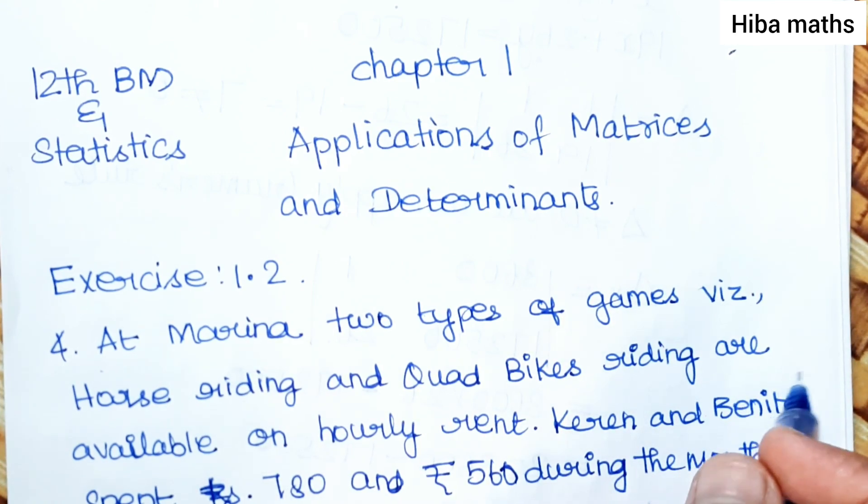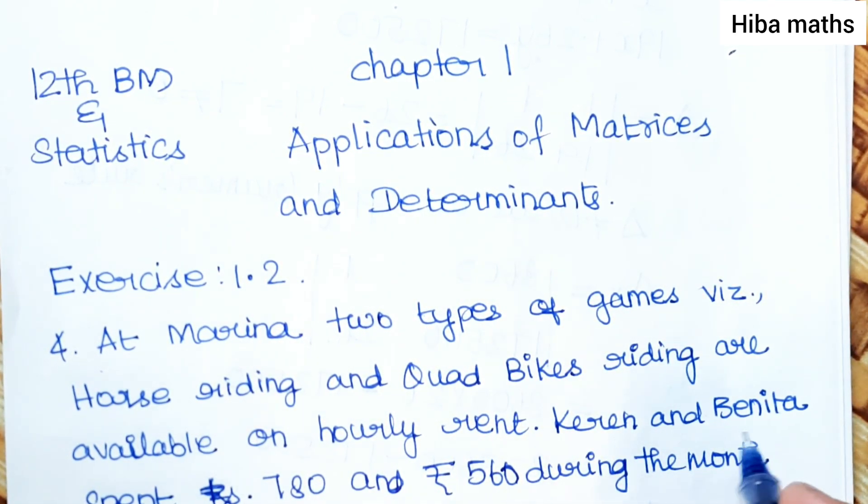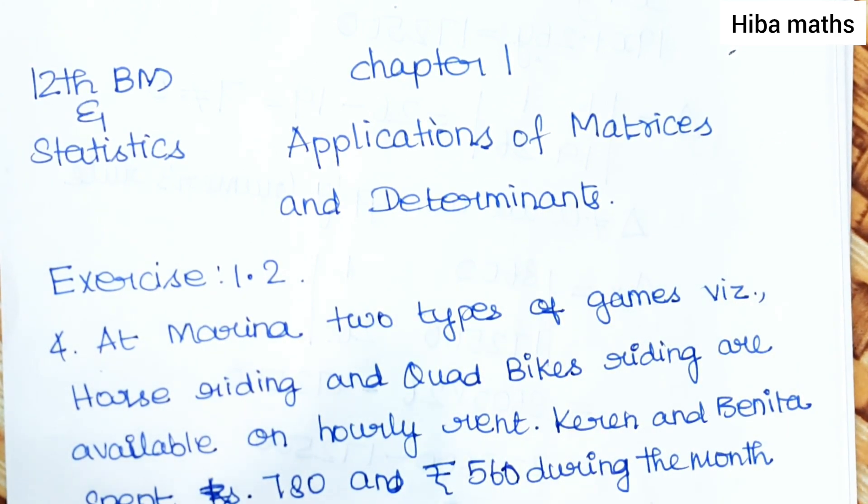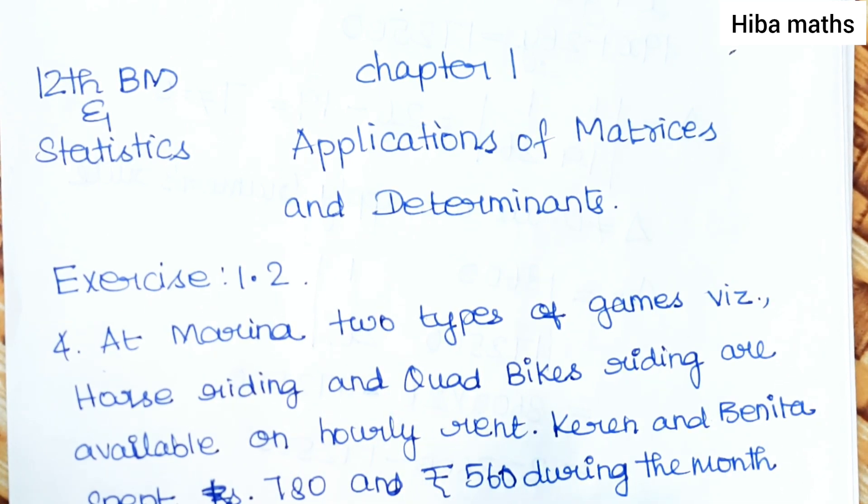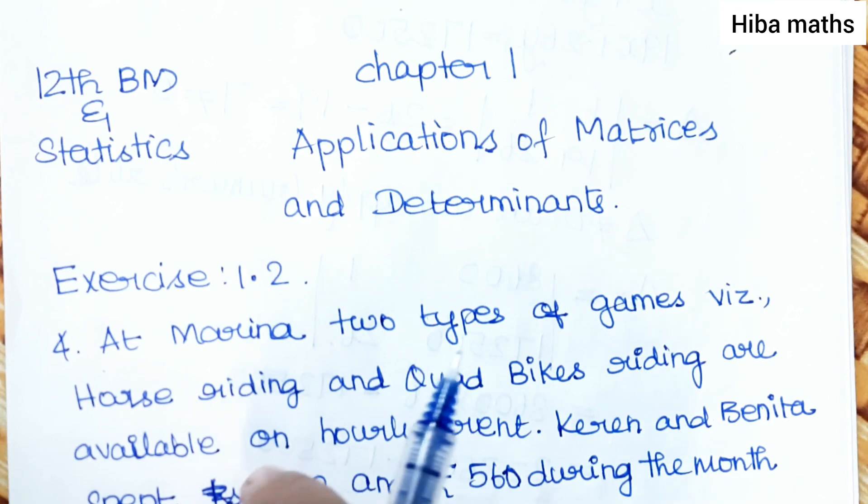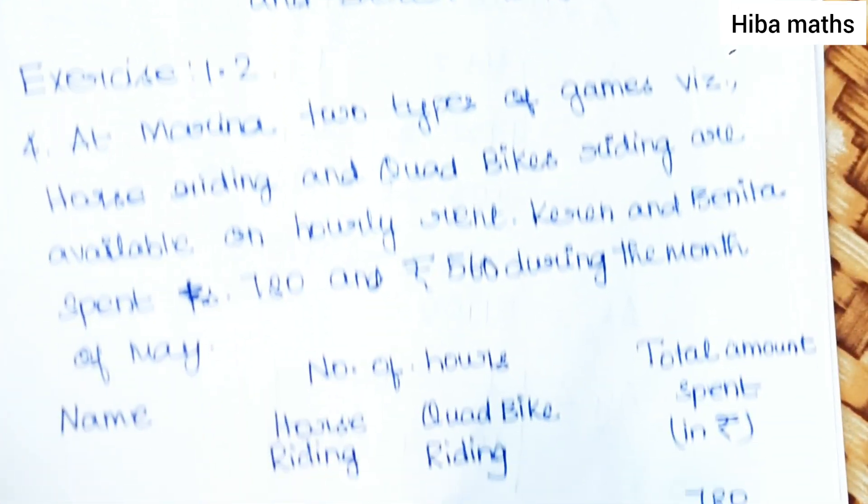At Marina, two types of games - horse riding and quad bike riding - are available on hourly rent. Karen and Benita spent rupees 780 and 560 during the month of May.